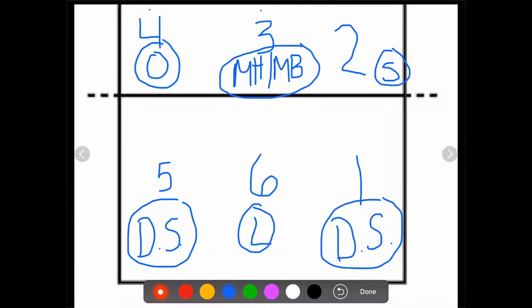The libero switches out with the middle blocker. So when the middle blocker comes out to do substitutions, the middle blocker comes back behind the 10-foot line, not in front.